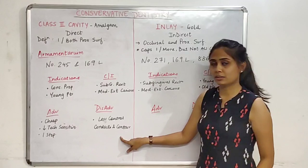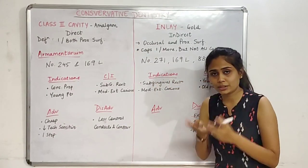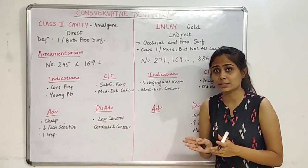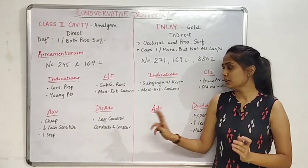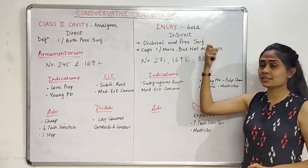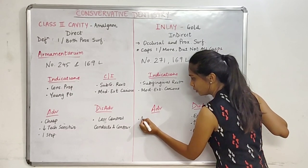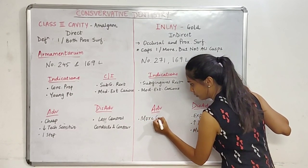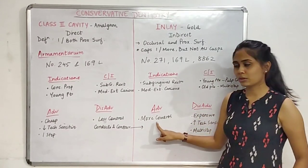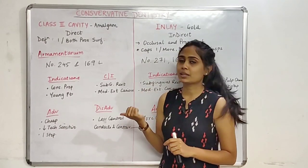Because it is a direct, single-step procedure done in the patient's mouth, we have less control over placing the contact points and forming the contours of our restoration. Whereas for the inlay cavity, as it is an indirect procedure done outside the patient's mouth, there is more control over contacts and contour — this is a significant advantage of the inlay.